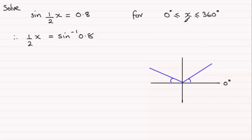We've also got to adjust this range here. Remember that what we've got here is a half x. So I divide each of these three values by 2. So 0 divided by 2 is going to be 0 still. This is going to be less than or equal to x over 2 which is going to be less than or equal to 180. So we've got half x or x over 2 lies between 0 and 180 degrees inclusive.